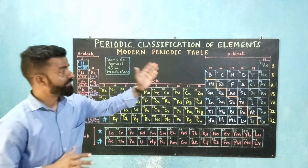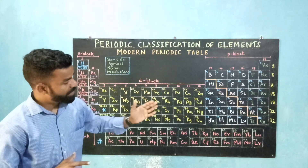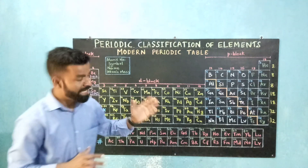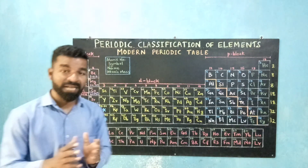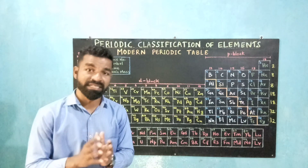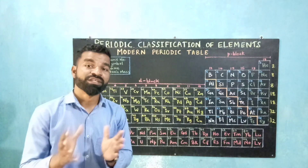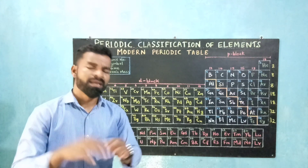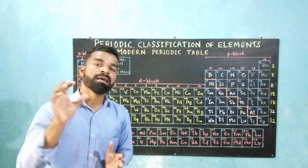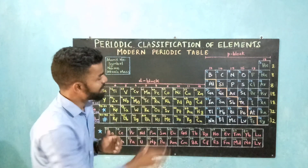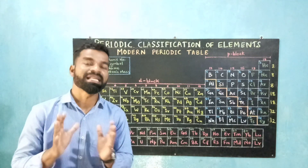Group 18 is composed of helium, neon, argon, krypton, xenon, radon, and oganesson. All these elements do not take part in chemical reactions as their outermost shells are completely filled and their electronic configuration is stable. And all these are gases, so they are called noble gases.